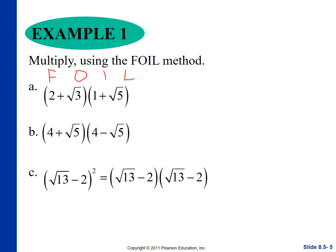So if we look at this first problem using FOIL: the Firsts give us 2 times 1 = 2, the Outside gives us 2√5, the Inside gives us √3 times 1 = √3, and the Last gives us √15. Since we can't simplify any of those, that's what you end up with.